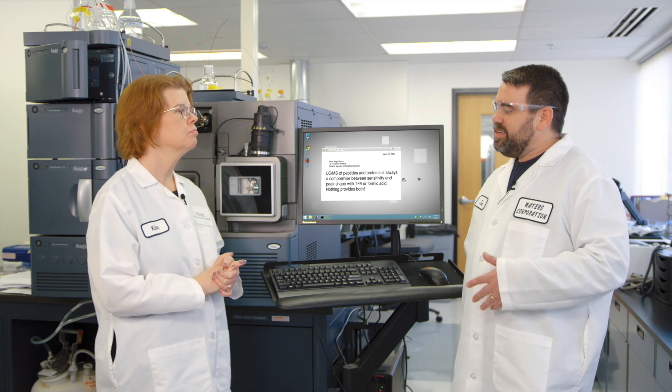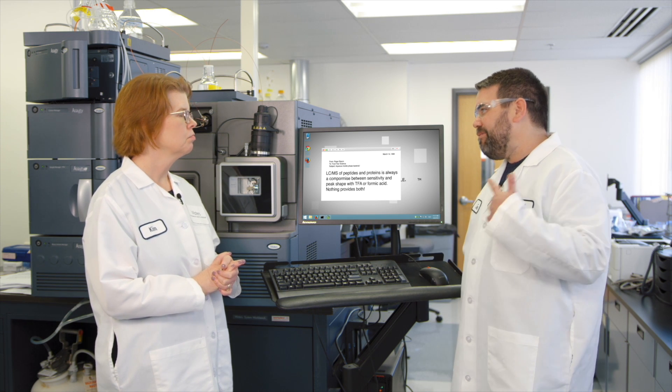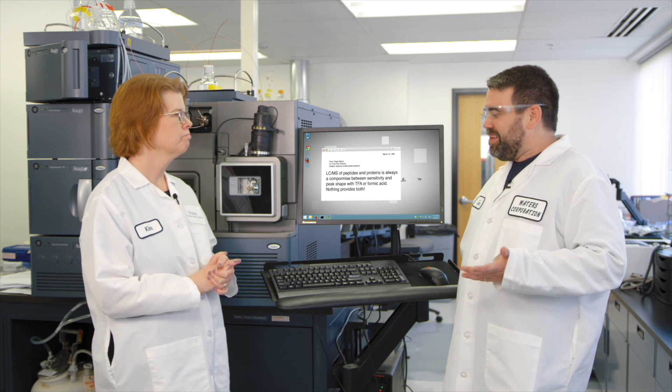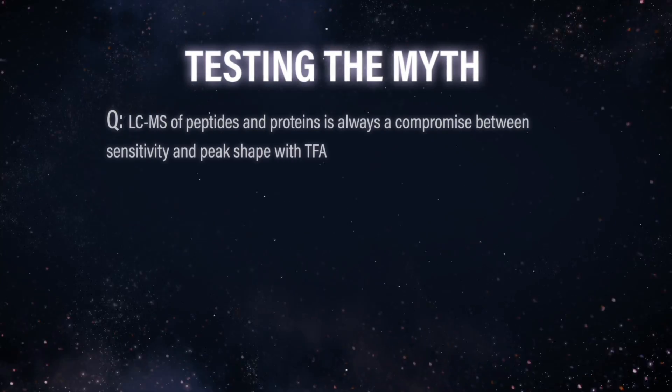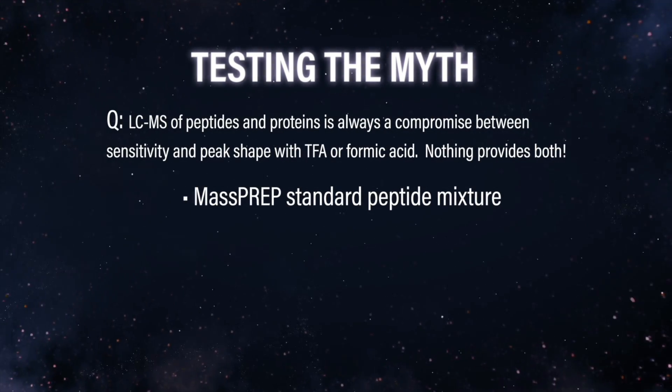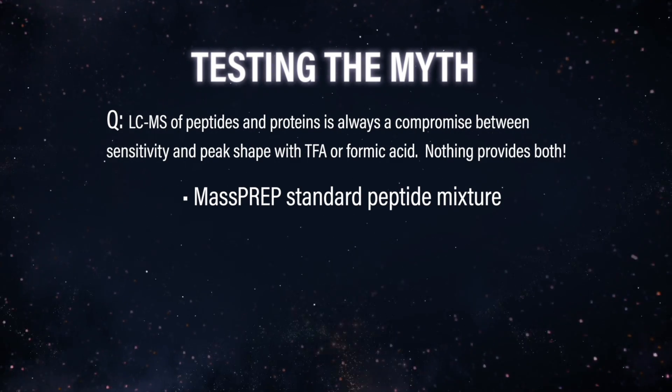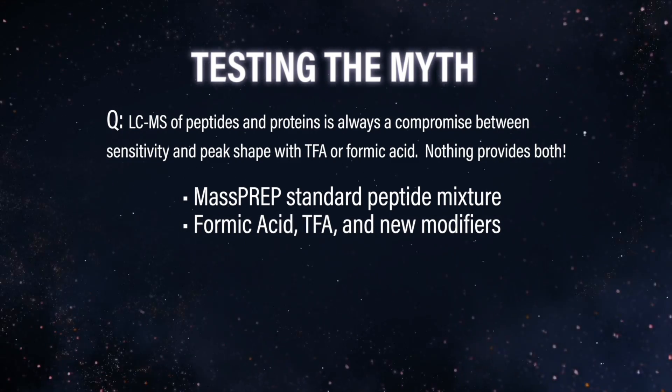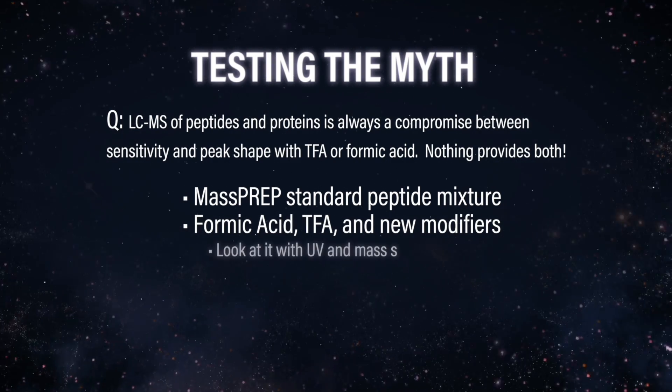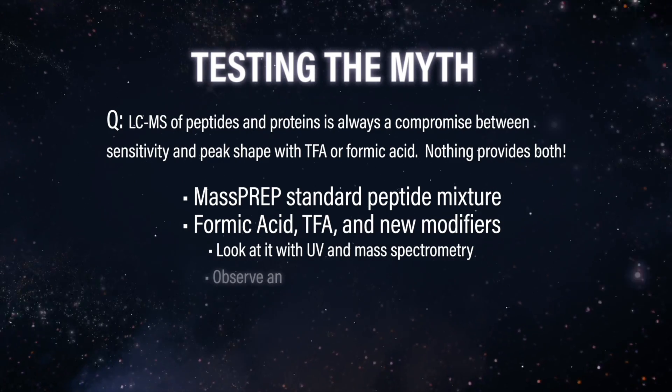More modern column chemistry — we've talked about CSH or charged surface chemistry in an earlier episode, and those are really good when using formic acid. They do improve the peak shape, but they might not give you the selectivity you're looking for. There's got to be some other solvents or additives we could try. Let's design an experiment using our mass prep standard peptide mixture, looking at formic acid, TFA, and maybe one of those new modifiers we've been reading about, evaluated with both UV and mass spec.